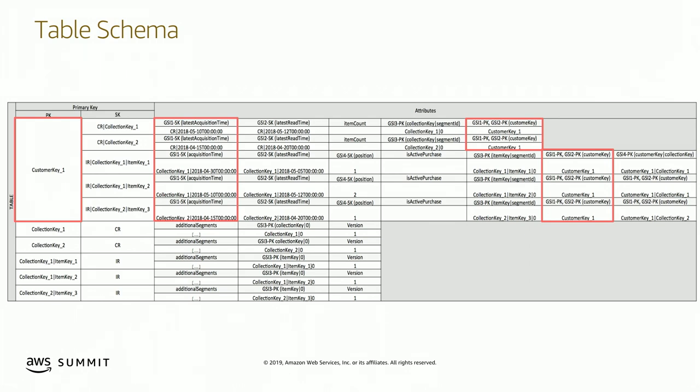GSI one will be sorted by acquisition time, and GSI two will be sorted by read time. Every time a customer opens their Kindle and reads a book, we're going to update the read time for the book and the read time for the collection that the book belongs to. Both of those queries will return the appropriate items.